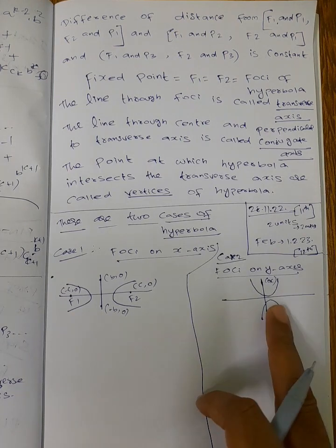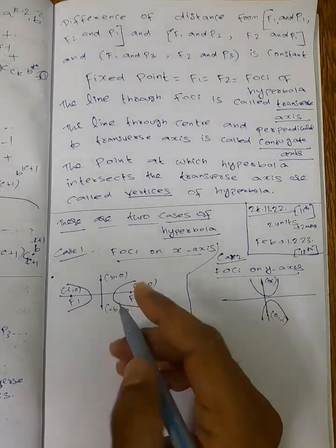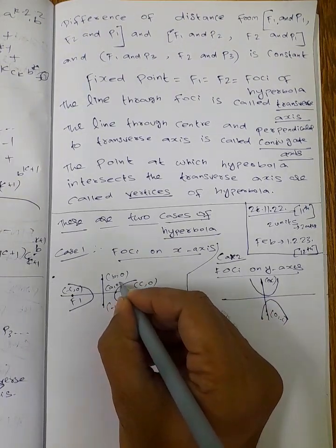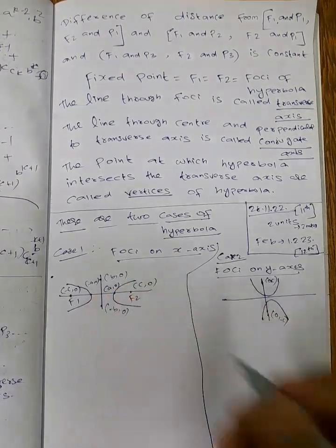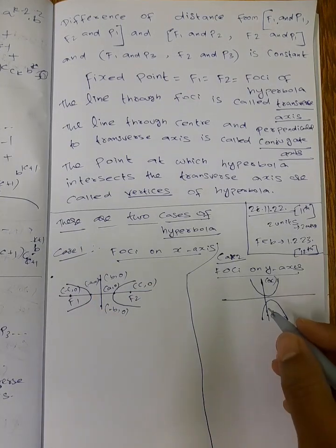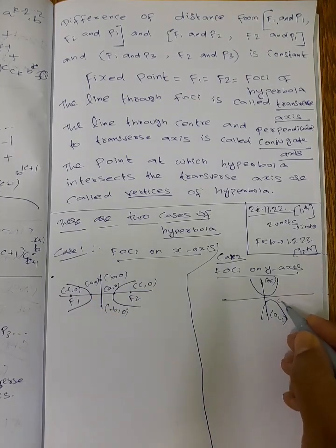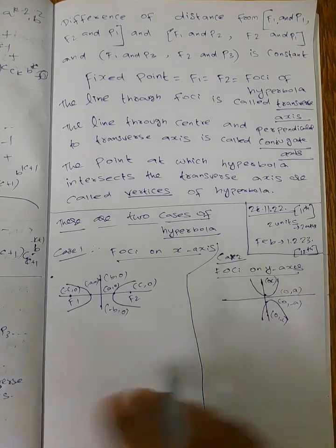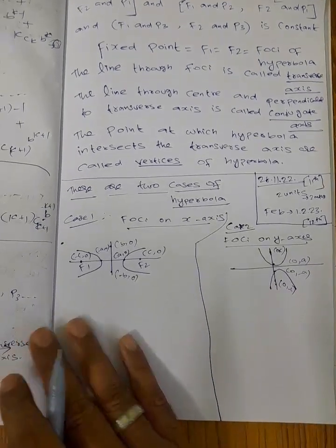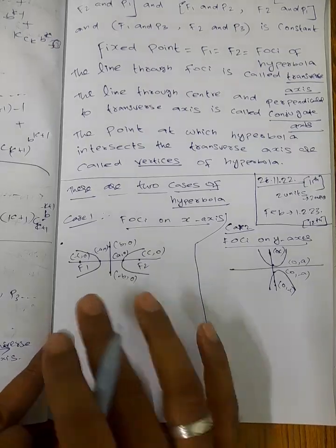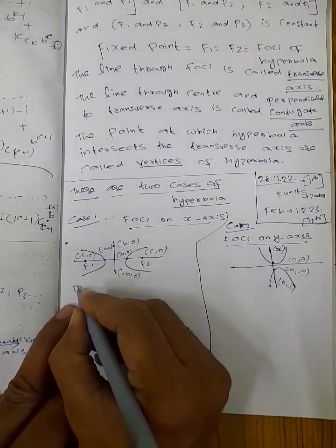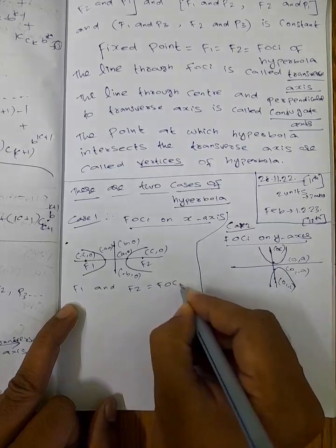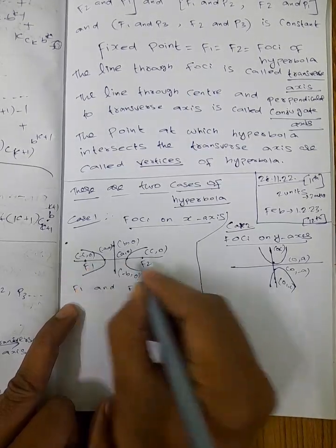For Case 1, the vertices are at (a, 0) and (−a, 0) on the x-axis. For Case 2 with foci on the y-axis, the vertices are at (0, a) and (0, −a). These are the foci coordinates F1 and F2 for both cases.